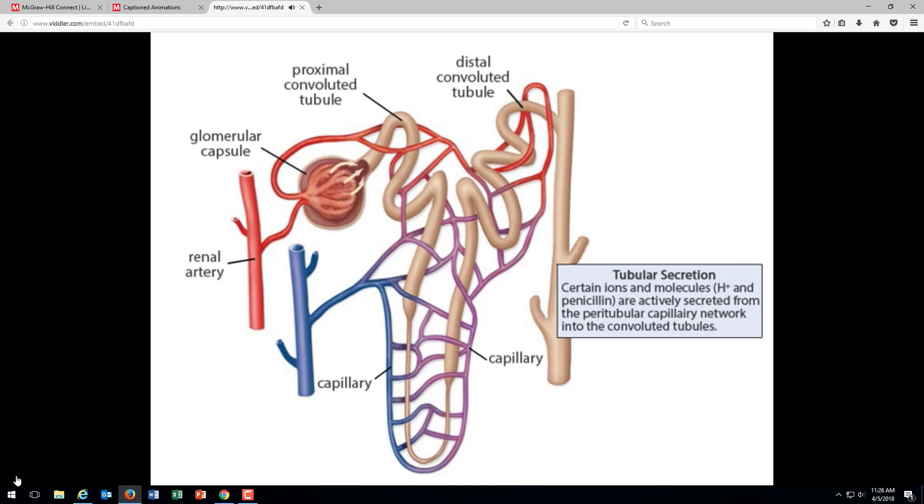These compounds are removed by active transport into the collecting duct, which connects to the ureter. The ureter moves the urine to the urinary bladder.